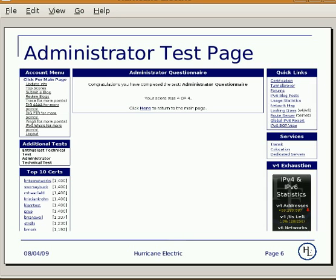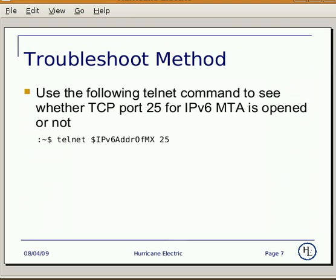This is the ending page. Alright, let's go over the troubleshoot method. Use the following telnet command to see whether TCP port 25 for IPv6 MTA is opened or not. Simply use telnet with the IPv6 address of MX and port 25.